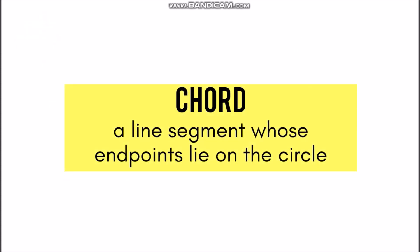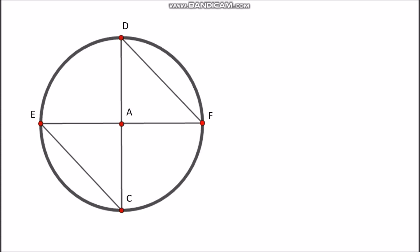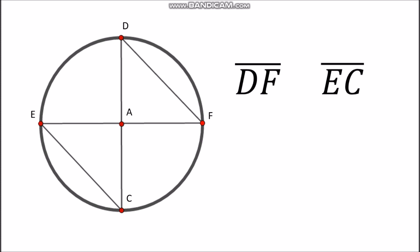Next, we have chord. A chord is a line segment whose endpoints lie on the circle. The chords are segment DF, segment EC, segment DC, and segment EF. Notice that the endpoints of the given chords are on the circle itself.